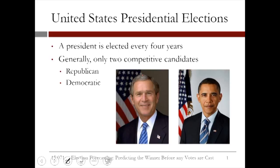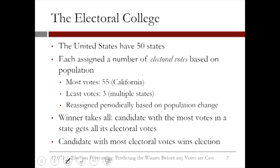Now, while in many countries the leader is elected using a simple popular vote — the candidate who receives the largest number of votes across the entire country — in the United States it's significantly more complicated. There are 50 states in the United States, and each is assigned a number of electoral votes based on its population. For instance, the most populous state, California,